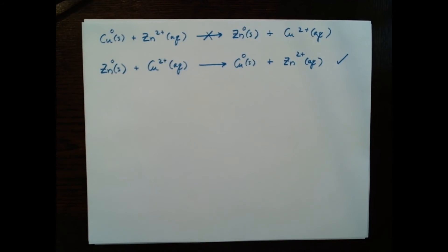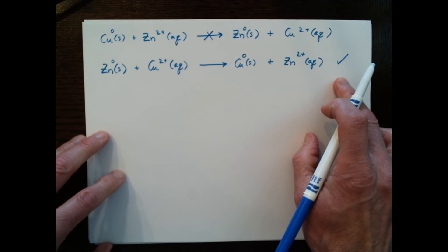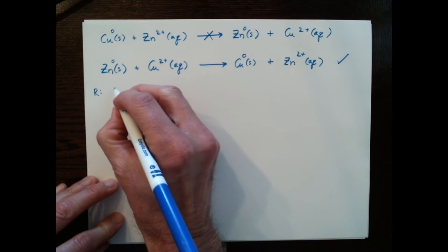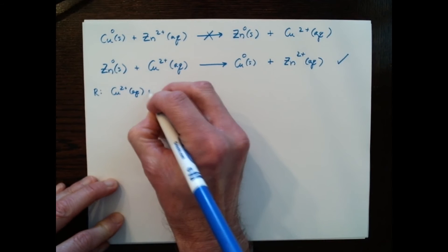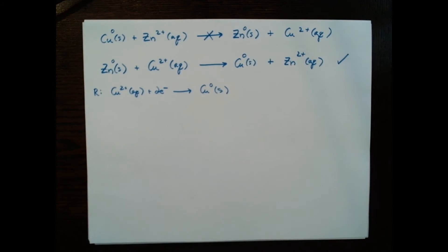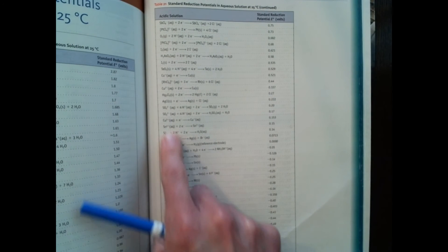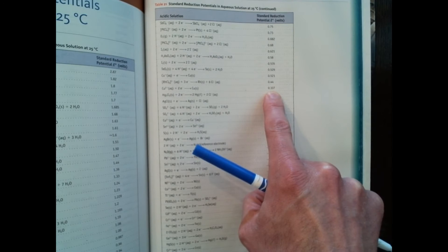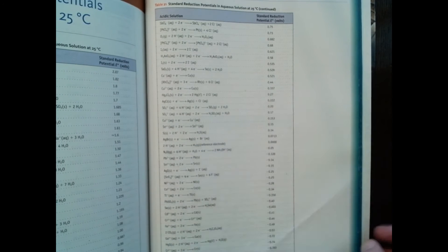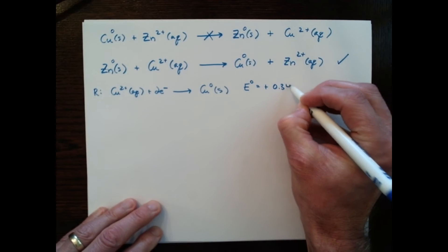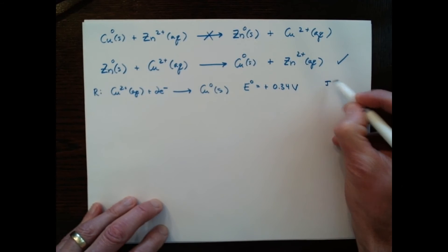Let's take the case where the reaction was spontaneous. I'll write the reduction half-reaction first: Cu²⁺(aq) + 2e⁻ → Cu(s). You should always be able to look up half-reactions in the table. Looking it up: Cu²⁺ + 2e⁻ → Cu(s) has a standard reduction potential E° = +0.34 V. A volt, by the way, is a joule per coulomb, where a coulomb is a unit of charge — so it's how much energy per charge you're getting.